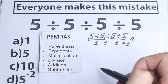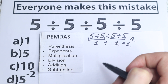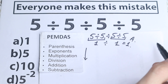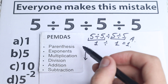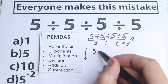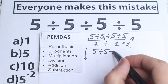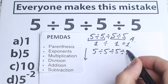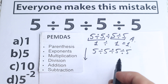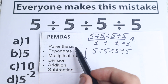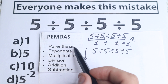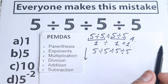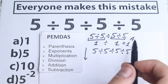PMDMC order of operations works from the top to the bottom. Let me write the question once more: 5 divided by 5, divided by 5, and divided by 5. According to PMDMC, the first step is parentheses — are there any parentheses here? No, we don't have any parentheses, so we move to the next step.